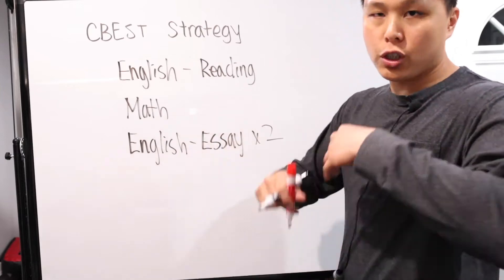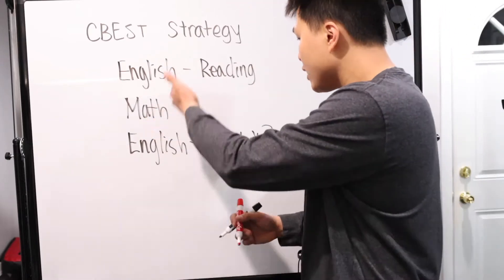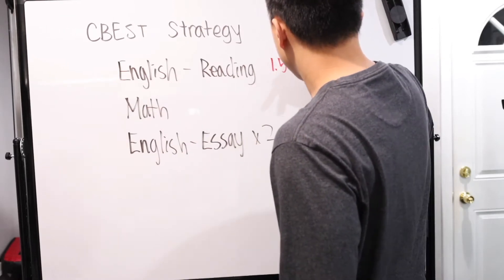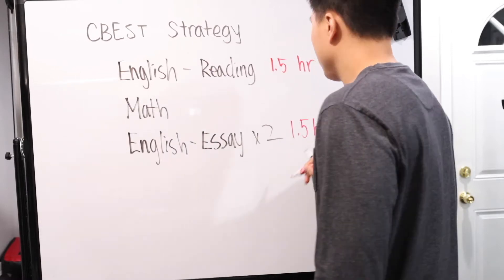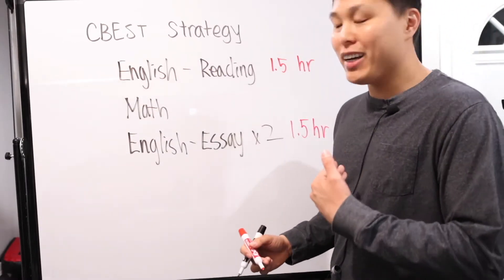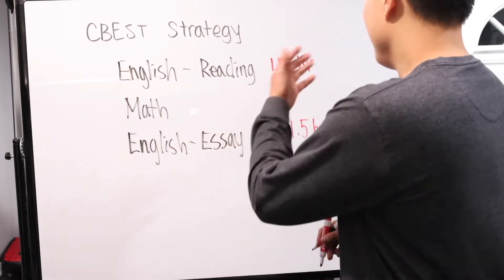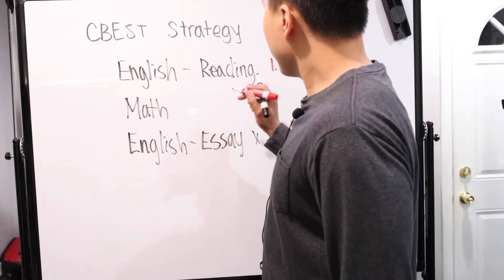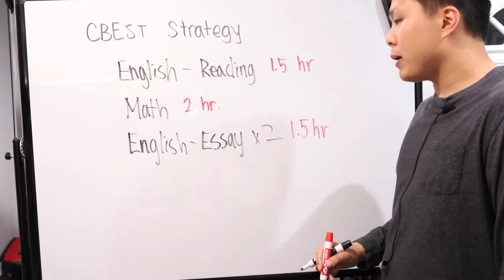So now we have these three topics. Well, first and foremost, let's just talk about the time allotted to each. Well, for both of these English subjects, you get 1.5 hours, a total of three hours in just English alone. If you're like me, English is not my strong suit. It was grueling for basically three hours of English. And for math, you have two hours.